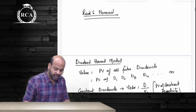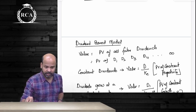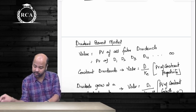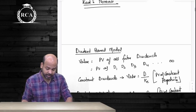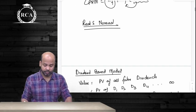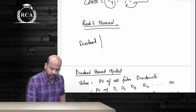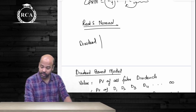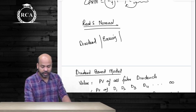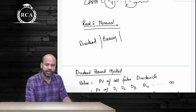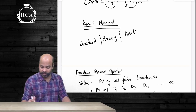To value an equity share we have different valuation methods covered in this chapter. I have divided them into three categories: the first is dividend-based models, after that earnings-based models, and the last one is asset-based or cash-flow-based models. Asset-based models fall under business valuation.